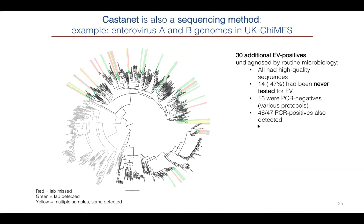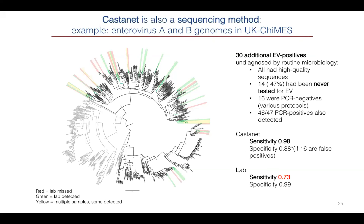Of the 47 PCR-positive samples that the laboratories detected, we detected 46 — one may have been from a different time point, it's not very clear. So we have pretty good accuracy overall. If you think of Castanet as the gold standard and compare the lab to that, the lab actually has only 73% sensitivity in our cohort with the routine microbiology applied. However, when routine microbiology does call something positive, we generally agree with them.